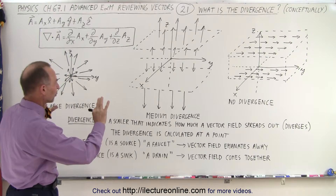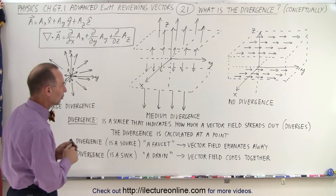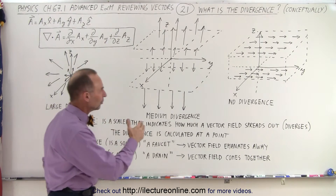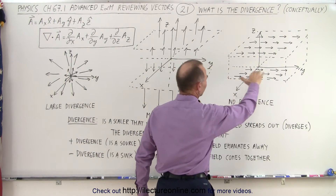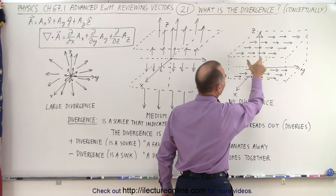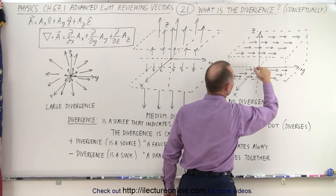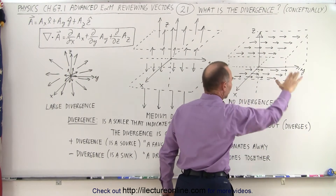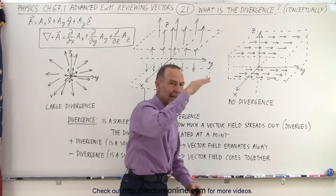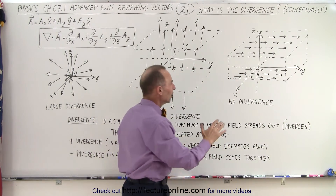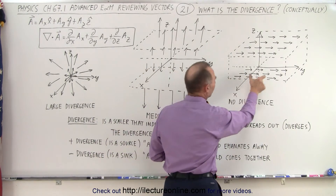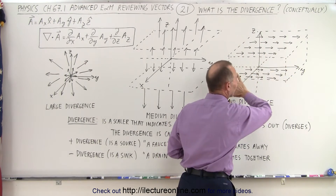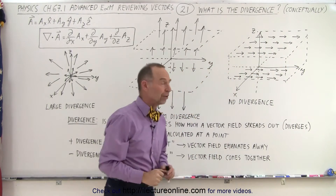Here I try to draw three different vector functions or vector fields. Notice that in the first field, we have the vectors all pointing to the right — they all have the same length. It doesn't matter if I'm high or low in the z direction; anywhere on the xy plane, at any height, the vectors all point in the same direction. We have a constant vector field that doesn't change no matter what direction I travel.